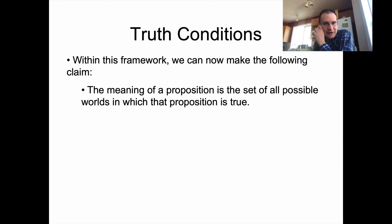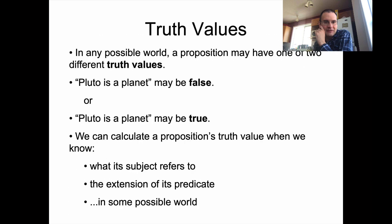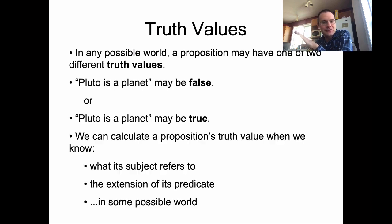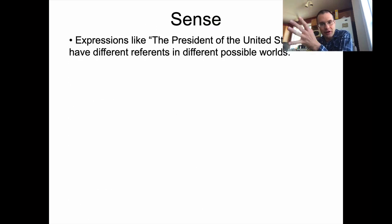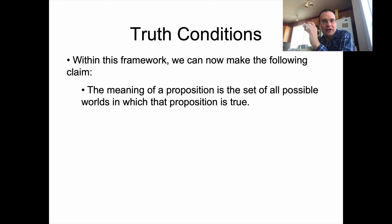So with this framework, we can make the following claim: the meaning of a proposition is a set of all possible worlds in which that proposition is true. A proposition can be either true or false — those are its different truth values — and when I'm talking about the meaning of a proposition, I'm talking about the set of all possible worlds in which that proposition is true.